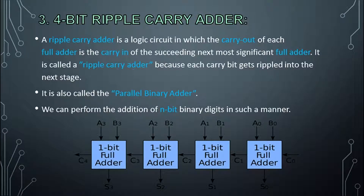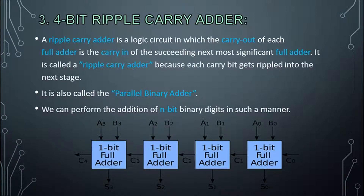Now we can start looking at the ripple carry adder. A ripple carry adder is a logic circuit in which the carry out of each full adder is the carry input of the succeeding, next most significant full adder. It is called a ripple carry adder because each carry gets rippled into the next stage.